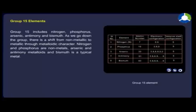As we go down the group, there is a shift from non-metallic to metallic through metalloidic character. Nitrogen and phosphorus are non-metals, arsenic and antimony are metalloids, and bismuth is a typical metal.